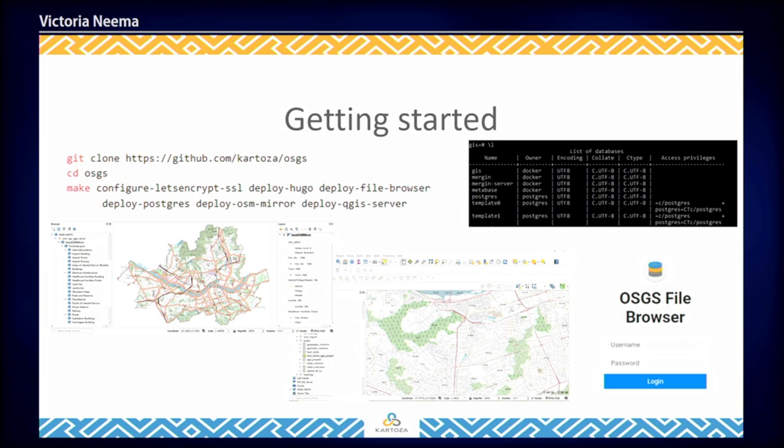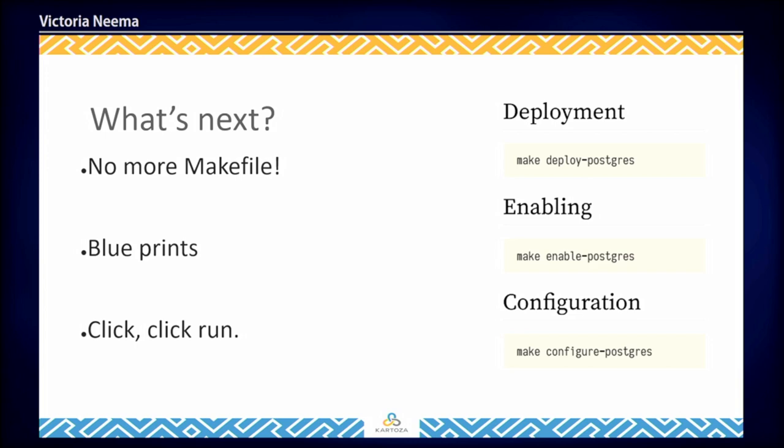Some of the changes we're planning to introduce in the platform are to get rid of the makefile, because we currently have a heavy dependence on make targets and a relatively complex Docker Compose configuration. We're planning to move to a cloud-native infrastructure design using Kubernetes. We're also planning to introduce blueprints, which will provide default configurations, boilerplate projects, sample data, and other components for application-specific purposes. We'll also be adding an admin UI to provide a click-to-run experience for stack deployment and a front-end management console.